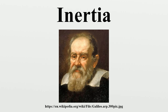The Aristotelian division of motion into mundane and celestial became increasingly problematic in the face of the conclusions of Nicolaus Copernicus in the 16th century, who argued that the Earth was in fact never at rest but was actually in constant motion around the Sun. Galileo, in his further development of the Copernican model, recognized these problems with the then accepted nature of motion and, at least partially as a result, included a restatement of Aristotle's description of motion in a void as a basic physical principle: a body moving on a level surface will continue in the same direction at a constant speed unless disturbed. Galileo writes that, all external impediments removed, a heavy body on a spherical surface concentric with the Earth will maintain itself in that state in which it has been; if placed in movement towards the West, it will maintain itself in that movement.